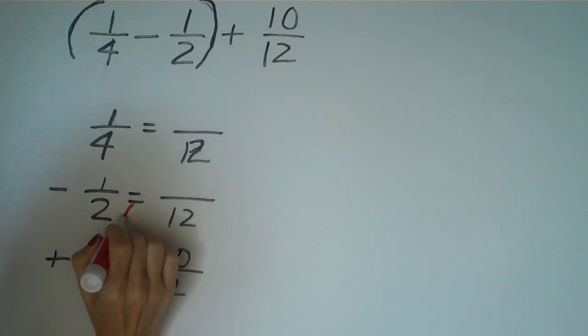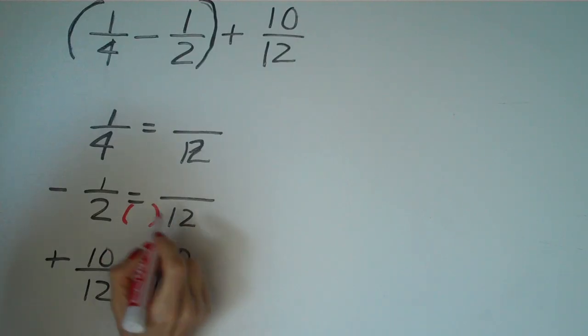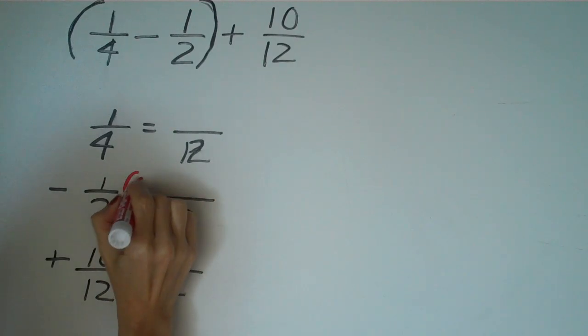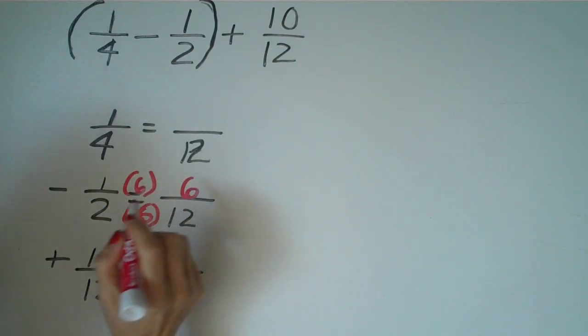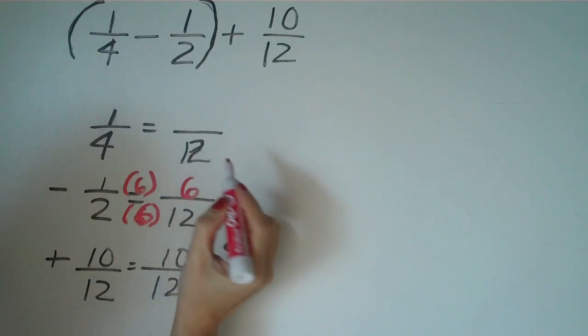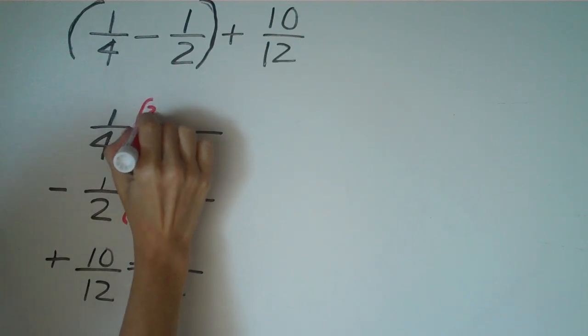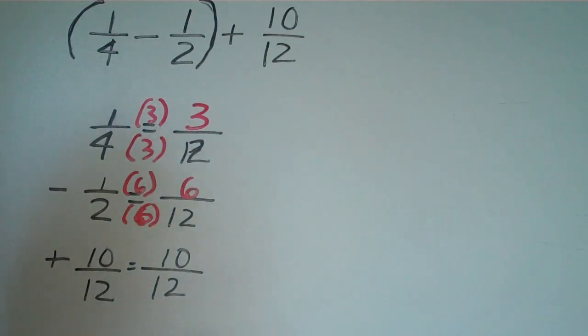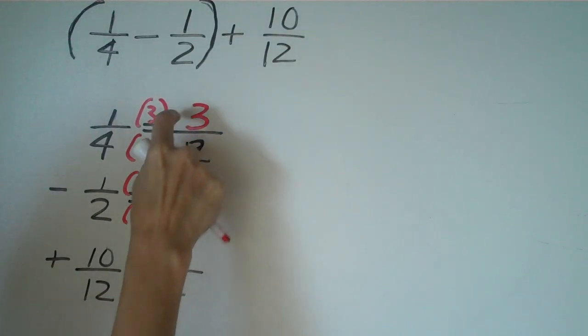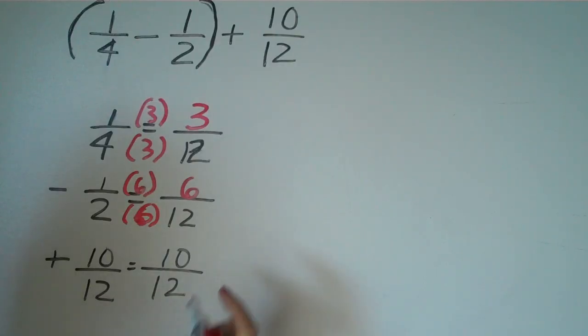And the 1 half, I know to go from a 2 to a 12, we have to multiply by 6. And we'll have to do the same on the top. So we have 6 on the top. And to go from a 4 to a 12, we have to multiply by 3. And we'd have to do the same on top to get an equivalent fraction. Really, really important. Whatever you're doing on the bottom, you have to do to the top.